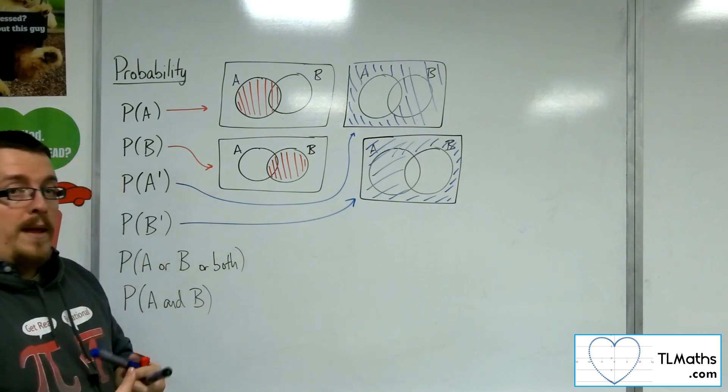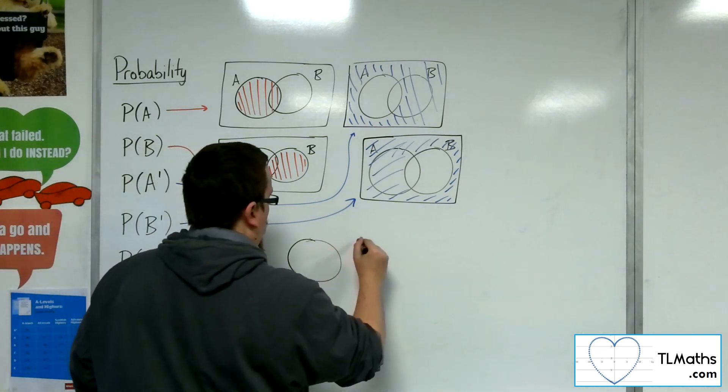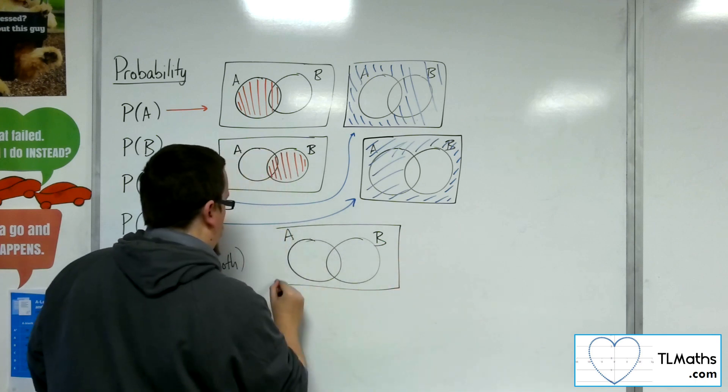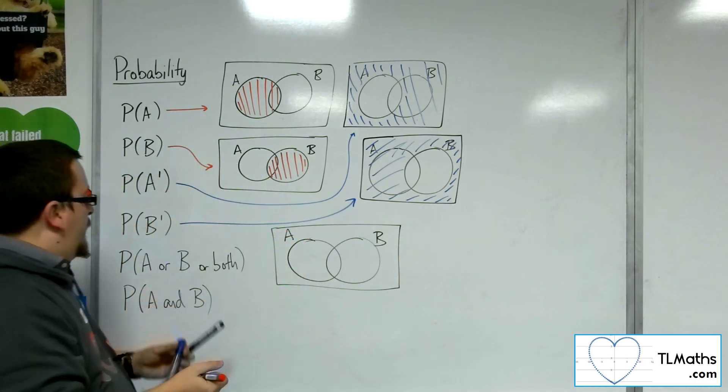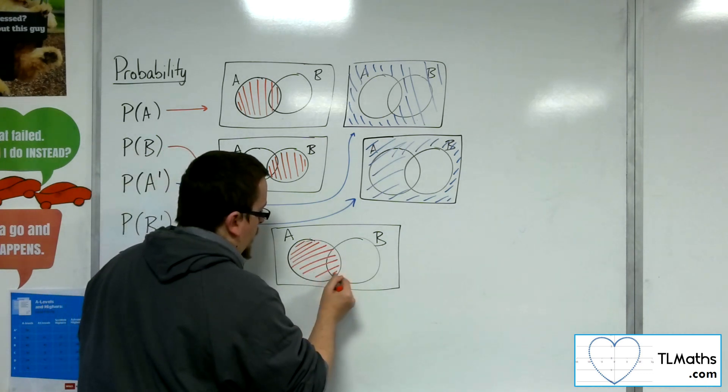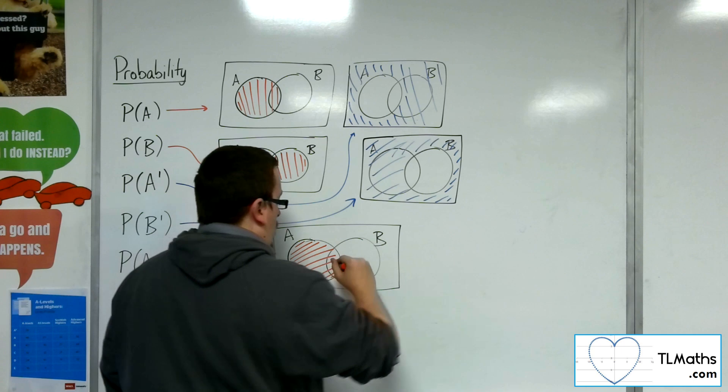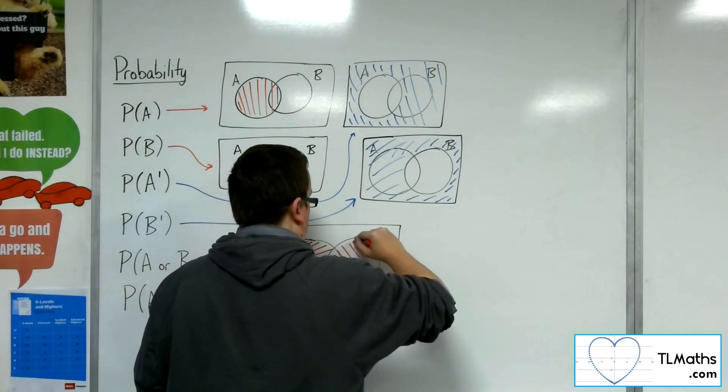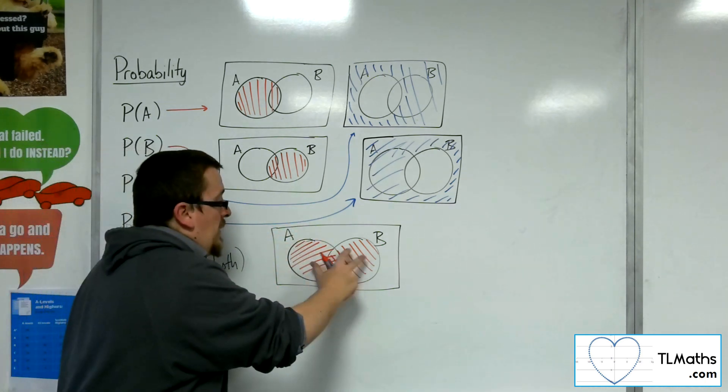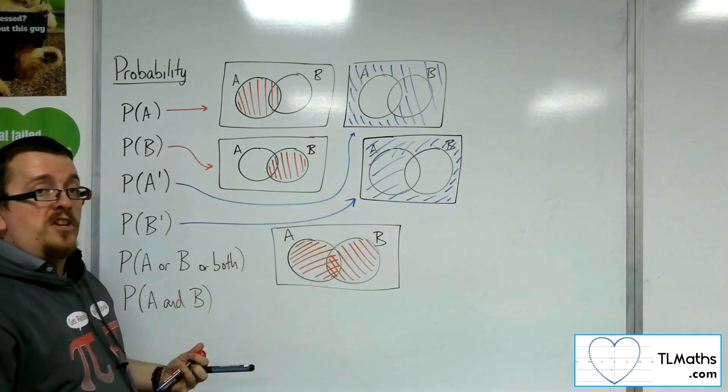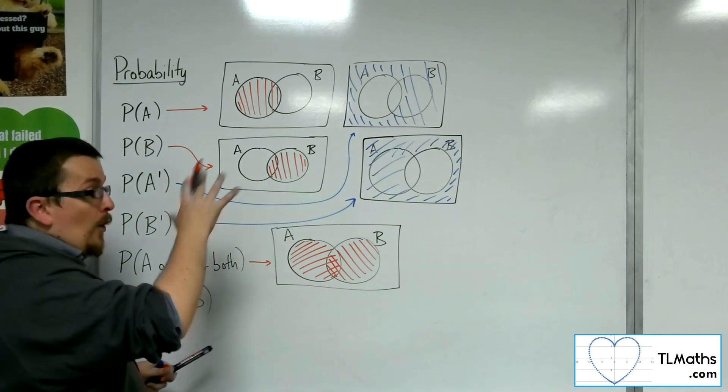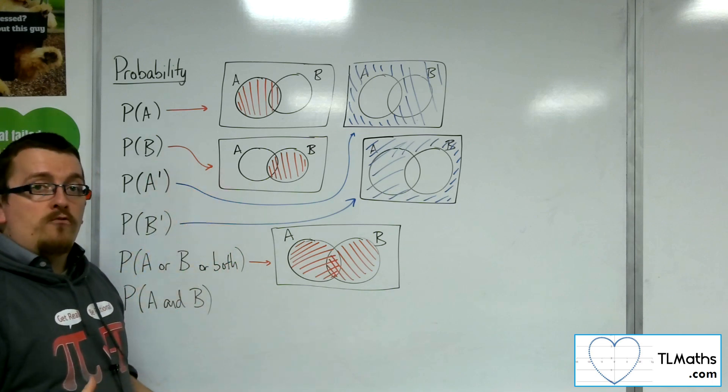Now if I'm looking at A or B or both, here's my two circles, here's my box around them. Then what I'm saying there is that either I'm looking at A, which is all of that, or I'm looking at B, which is all of that circle, or both. So it includes the intersection. So it's anything that is within those two circles, including where they overlap, because it's A or B or both. It can be any of those three regions.